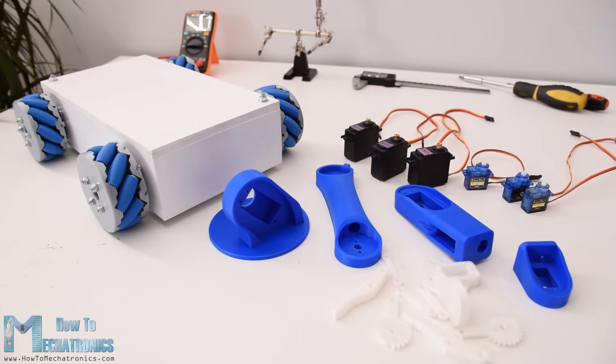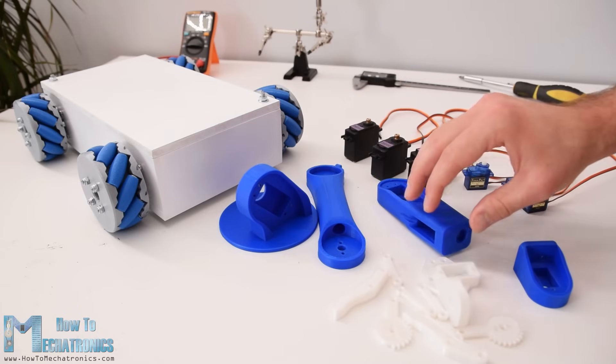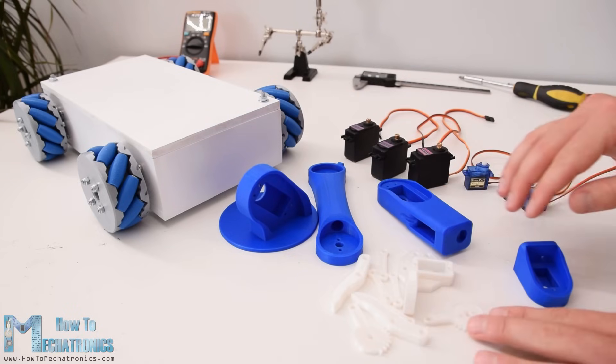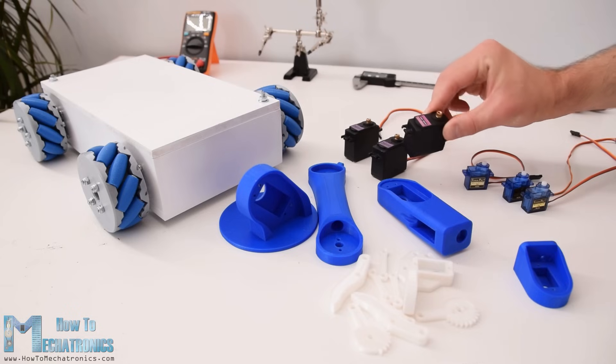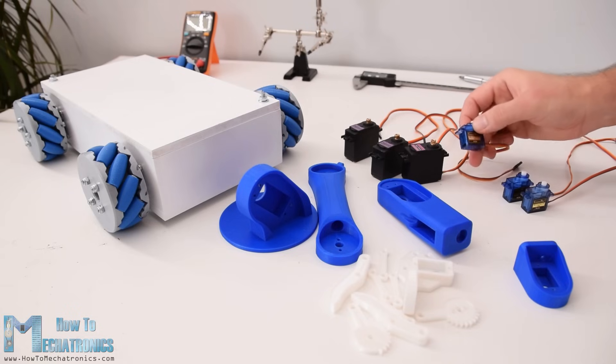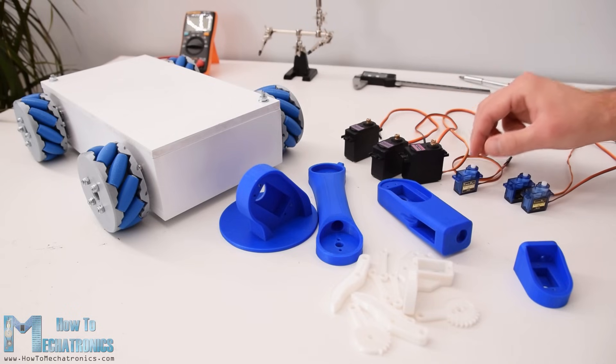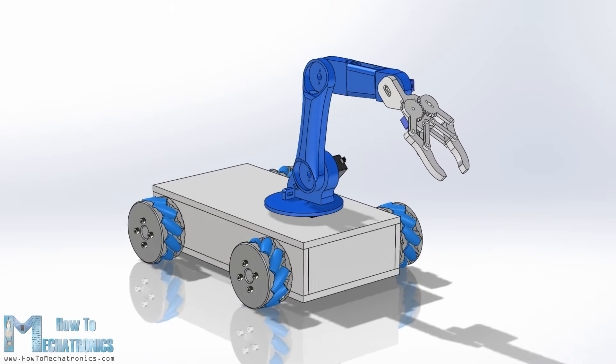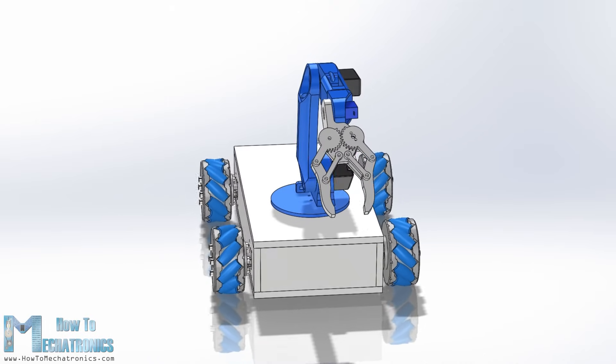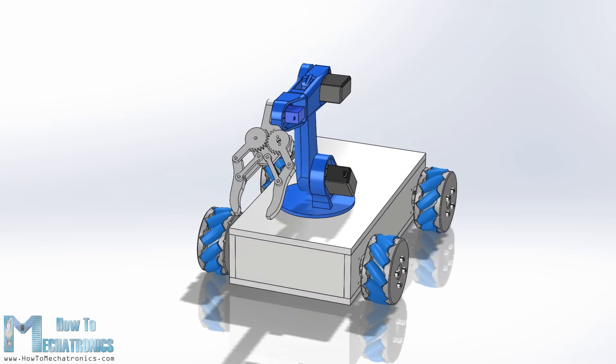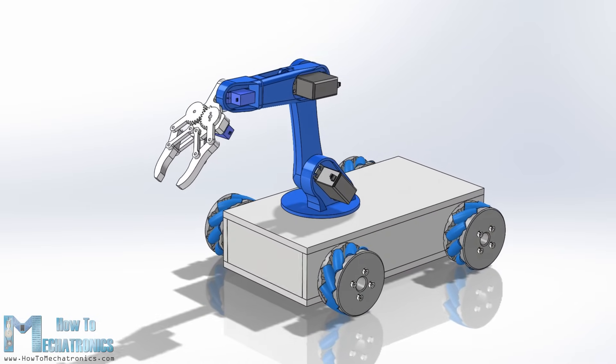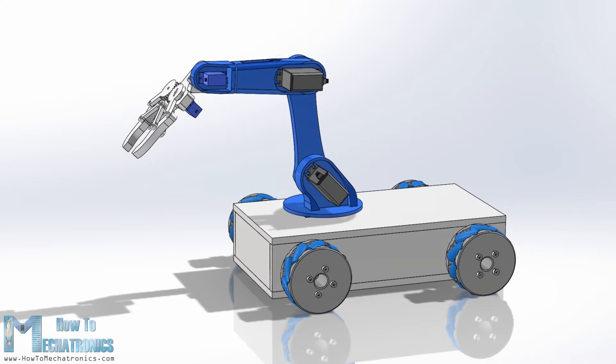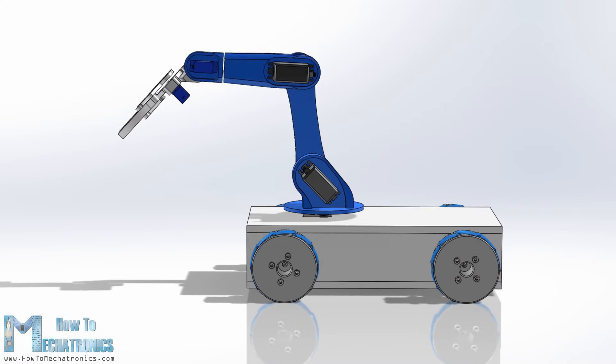Ok, so here I have the Mecanum wheels platform already assembled and you can find all details about it in my previous video. Also, here I have the 3D printed parts of the Robot Arm and the servo motors and now I will show you how to assemble them. You can find and download the 3D model of this project as well as the STL files which are used for 3D printing on the website article. The link to it is in the description of the video.